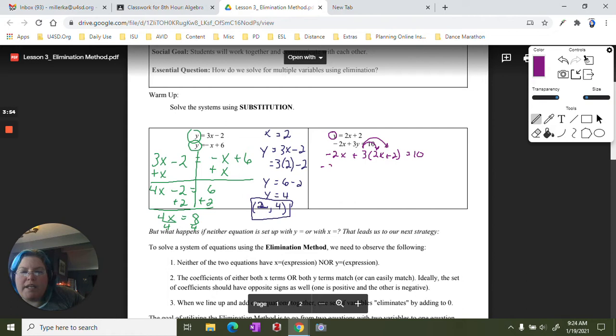Distribute my 3. So I have negative 2x plus 6x plus 6 equals 10. Combine my like terms. Negative 2x plus 6x is 4x plus 6 equals 10. I am going to subtract 6 from both sides of my equation, and I get 4x equals 4. 4 divided by 4, and we get x equals 1.